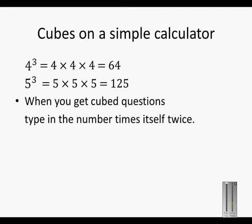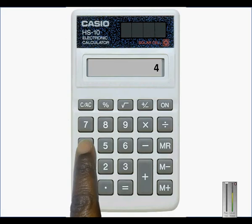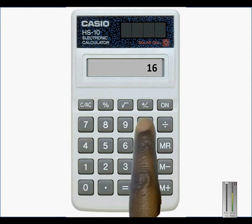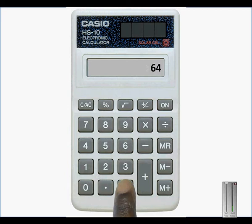When you get cubed questions, you type in the number times itself twice. So you'll go 4 times 4. When you press times again, the answer might change on the screen to 16, and then times 4 equals 64.